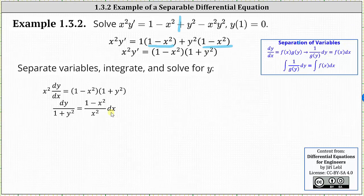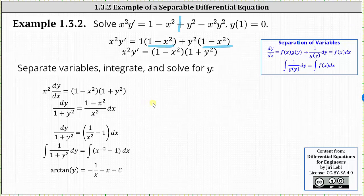Before integrating, let's simplify the quantity one minus x squared divided by x squared. This gives us one divided by x squared minus x squared divided by x squared, which simplifies to one divided by x squared minus one. So we have dy divided by the quantity one plus y squared equals the quantity one divided by x squared minus one, times dx.